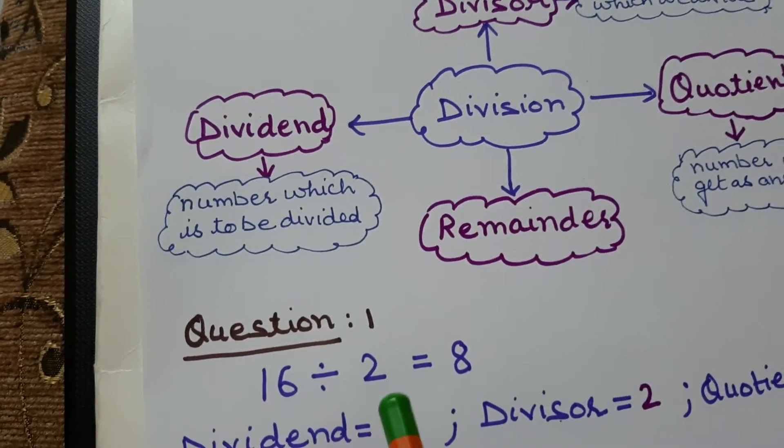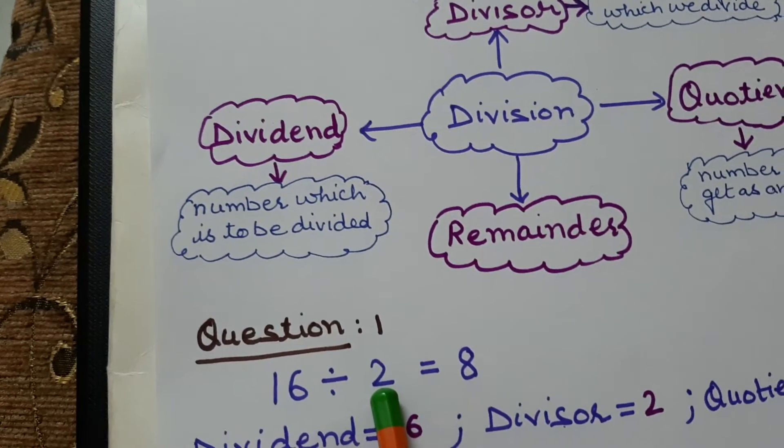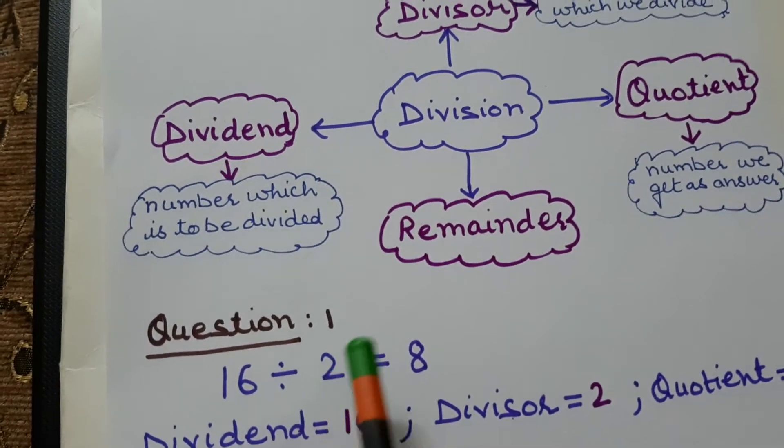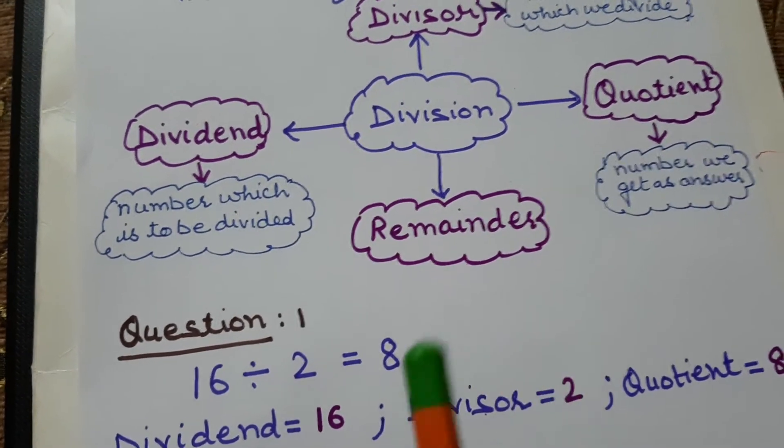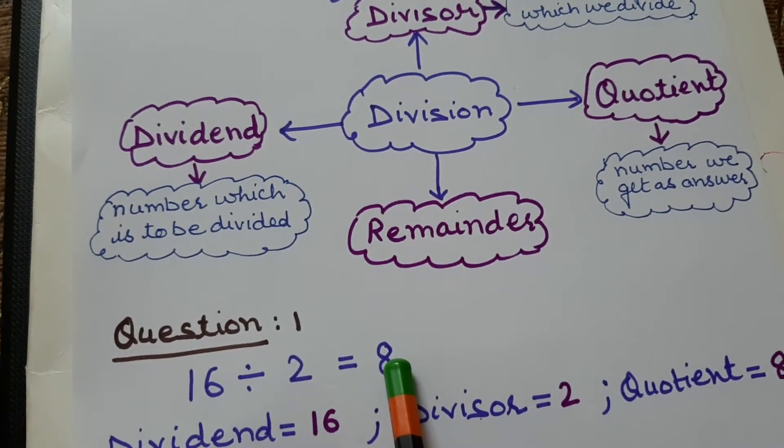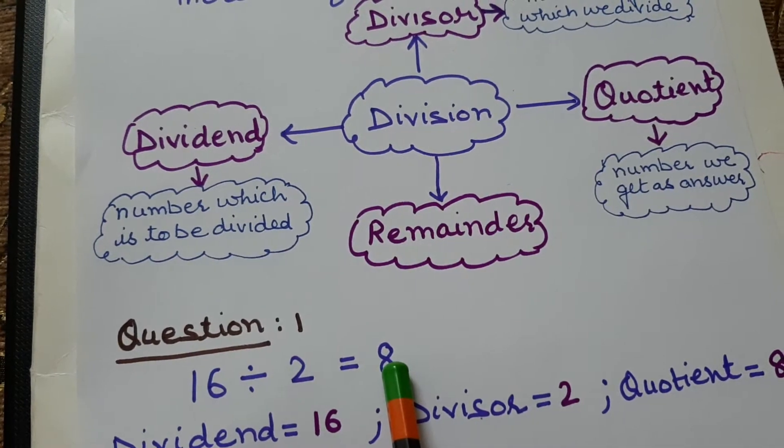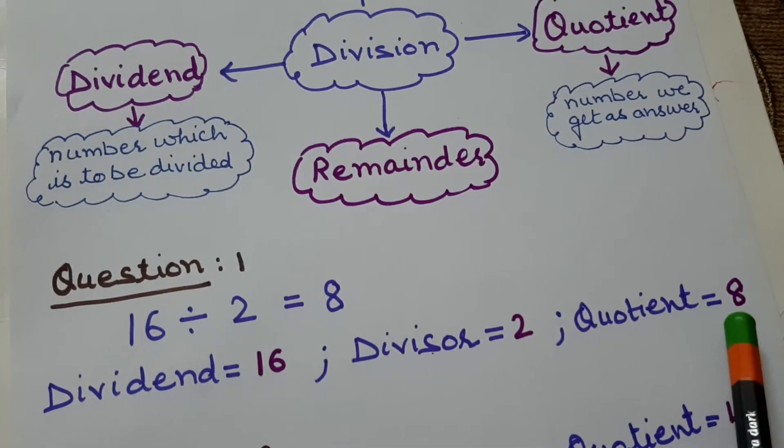Now with which number we are dividing? 16. That is 2. So that is divisor. Now which number we are getting as answer? That is 8. So 8 will be our quotient.